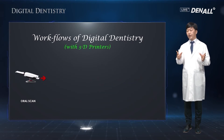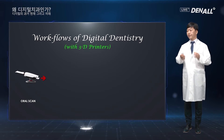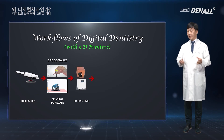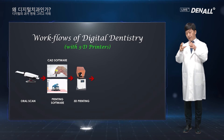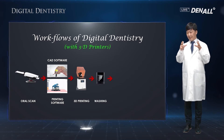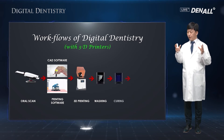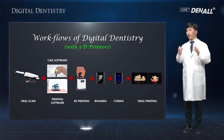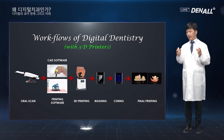If printing something using a 3D printer, you need to scan, design, and print it out. After that, in order to remove debris off the material, you do washing. Once done, you do a curing process to make it set and harden. Finally, you adjust the restoration and fit it to the patient's mouth.